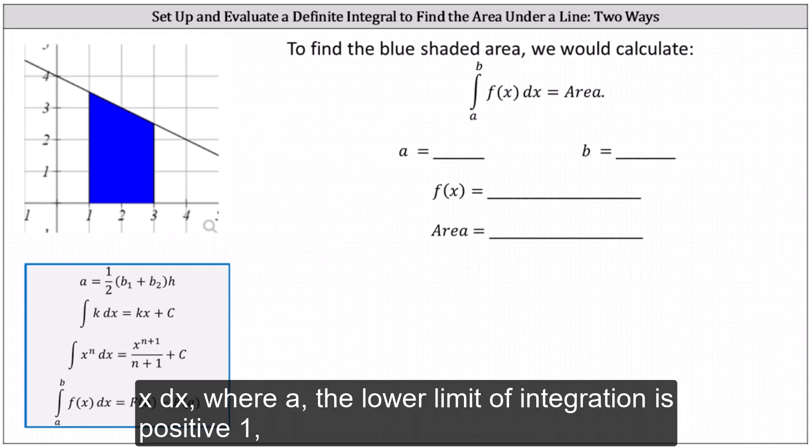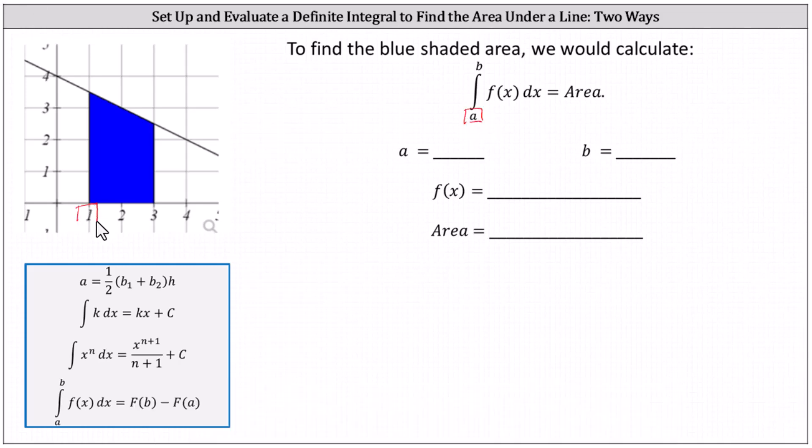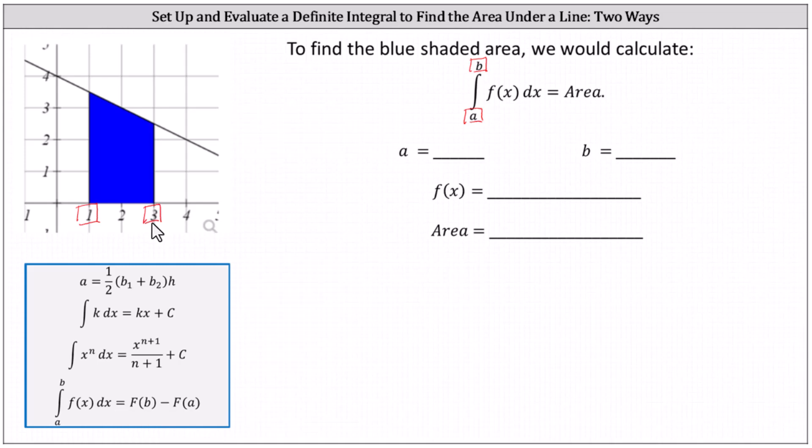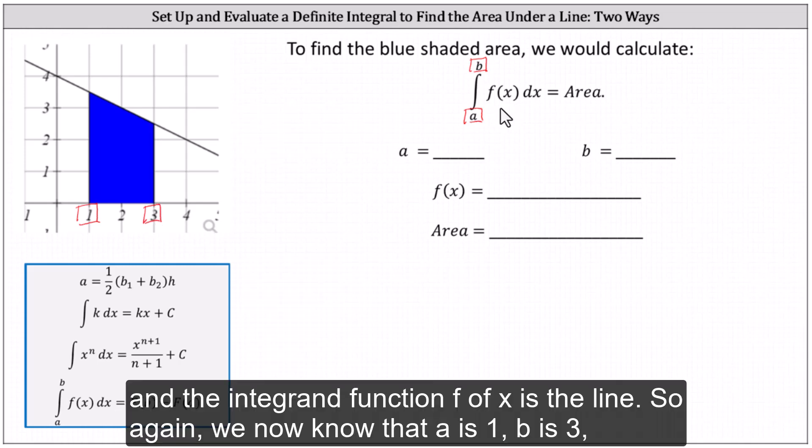Where a, the lower limit of integration is positive one, and b, the upper limit of integration is positive three. We now know that a is one, b is three.